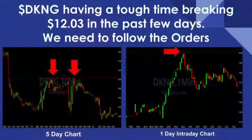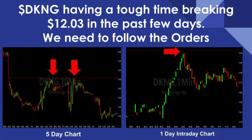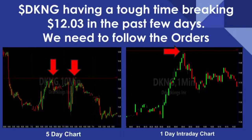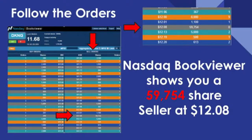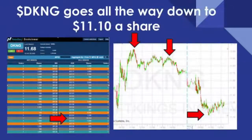DraftKings was trending up pretty nicely — some people might call that a double top. You can see I had two charts: a one-day intraday chart and a five-day chart. With the five-day chart it constantly had this problem of breaking the resistance level. Everybody wants to know what that resistance level is, but when you look at NASDAQ Total View it makes perfect sense — there is literally a 59,000 share seller. Compared to 300 or 500 shares elsewhere, that's a major resistance. If you were not prepared at that resistance, the stock took a big hit and that profit becomes a loss.